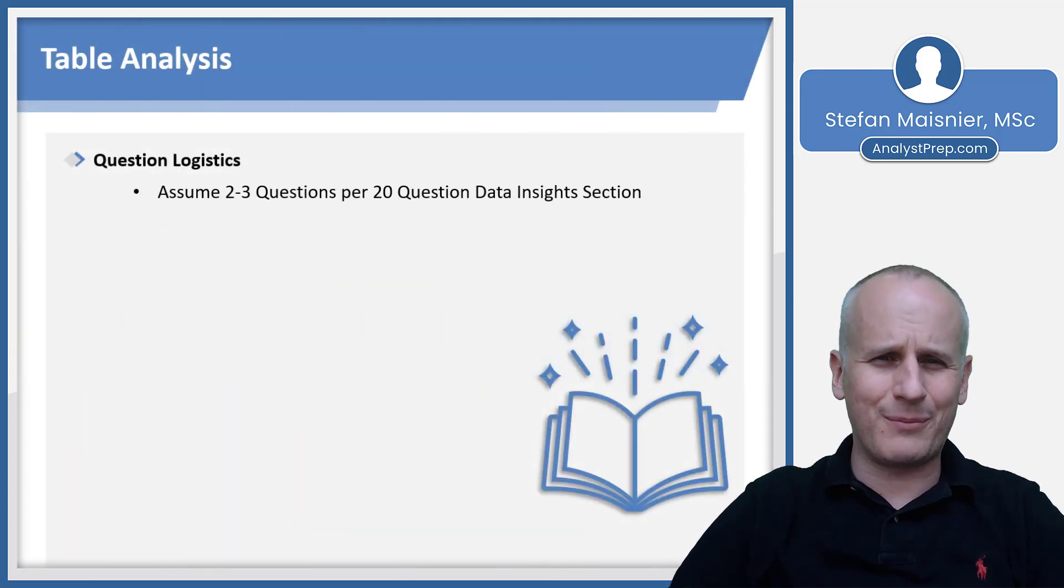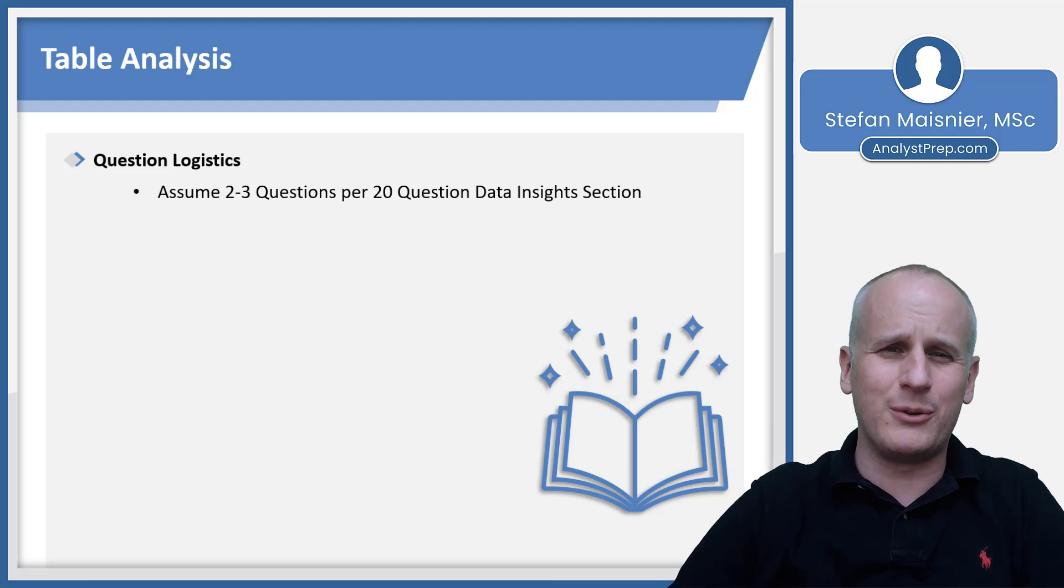Logistically, there aren't probably going to be two to three table analysis questions. At this point, there are likely to be somewhere around four table analysis and graphics interpretation questions, but there could still be three, so we say two to three, but it's more likely to be one to two. Again, it can be anywhere in there, and you basically want to assume that you're not going to see that many table analysis.